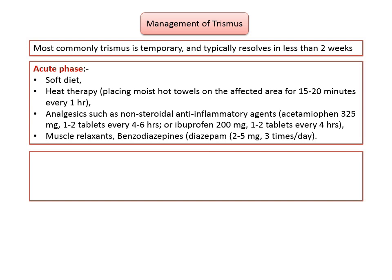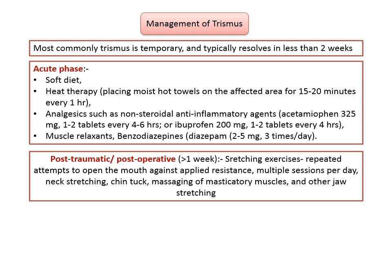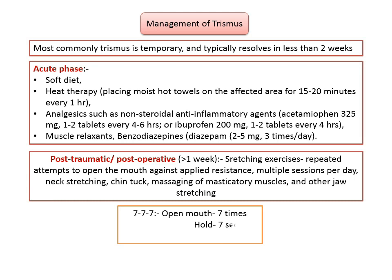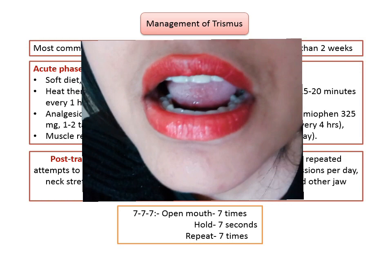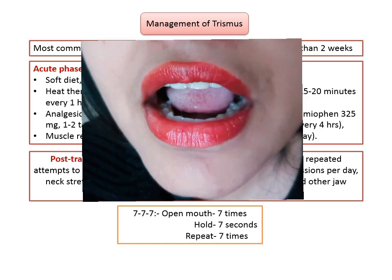Patients with post-traumatic and post-operative trismus, especially when persisting longer than one week, may also require stretching exercises — typically repeated attempts to open the mouth against applied resistance, divided into multiple sessions per day. In order to establish normal function, exercises such as neck stretching, chin tuck, massaging of masticatory muscles, and other jaw stretching exercises should be done. A good starting regimen is the 7-7-7 exercise: open and close the mouth with assisted opening seven times, hold the open position for seven seconds, and perform these exercises seven times per day.